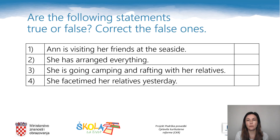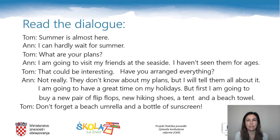Now you will read a dialogue. After the reading, your task is to decide whether the following statements are true or false, and correct the false ones. The statements are: Anne is visiting her friends at the seaside. She has arranged everything. She is going camping and rafting with her relatives. She FaceTimed her relatives yesterday.